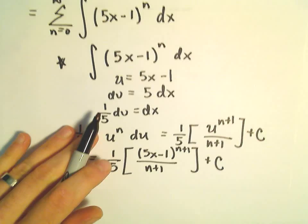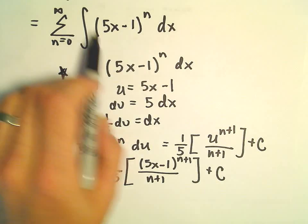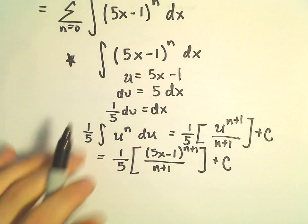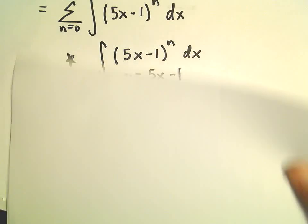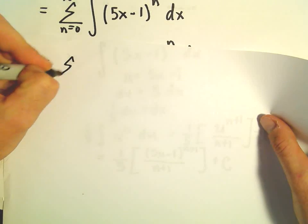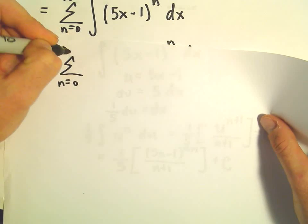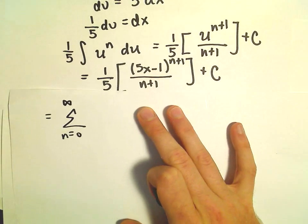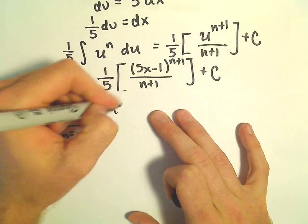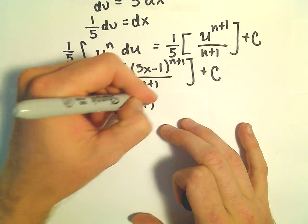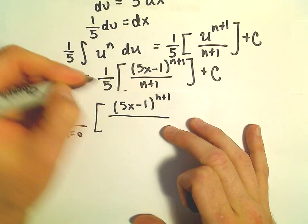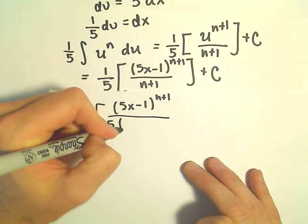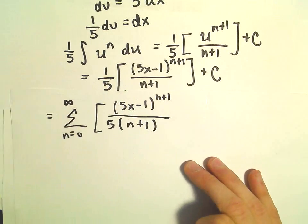So it says, hey, if we sum up the integral, in this case, we'll just be left with the series n equals 0 to infinity. And again, we just integrated our function. And we said what we're left with is going to be, well, 5x minus 1 raised to the n plus 1 power. We could stick our 5 in the denominator, multiply that by n plus 1.